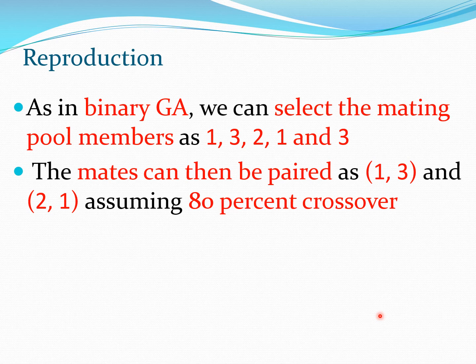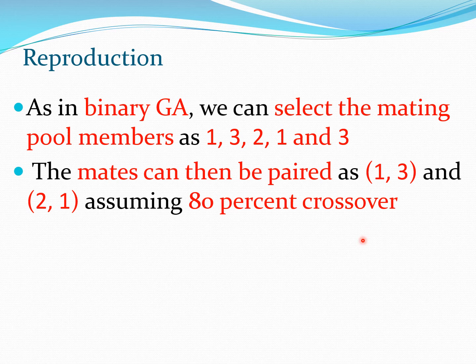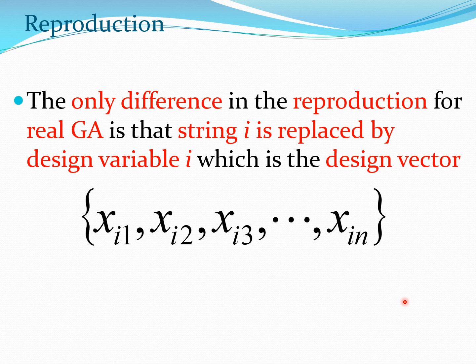Once you have the mating pool members, you create pairs and keep one particularly good point separate that you do not want to change. The only difference in the reproduction process for real GA is that 'string i' is replaced by 'design variable i,' which is actually the design vector. The mating pool creation does not create any new points; it simply selects members for further operations.